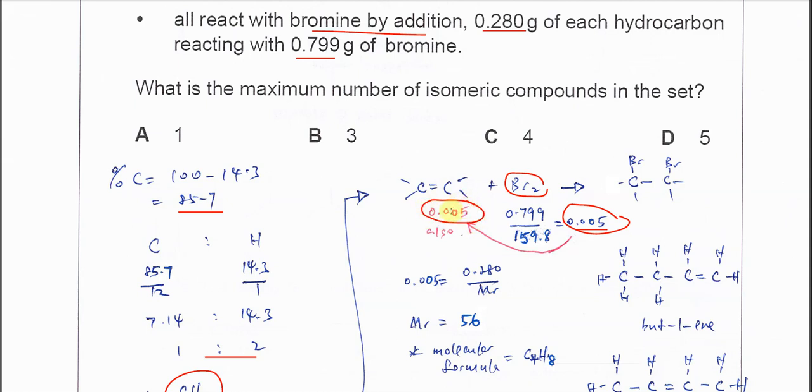So it's 0.005 moles, meaning the moles of alkene involved must be 0.005 as well.